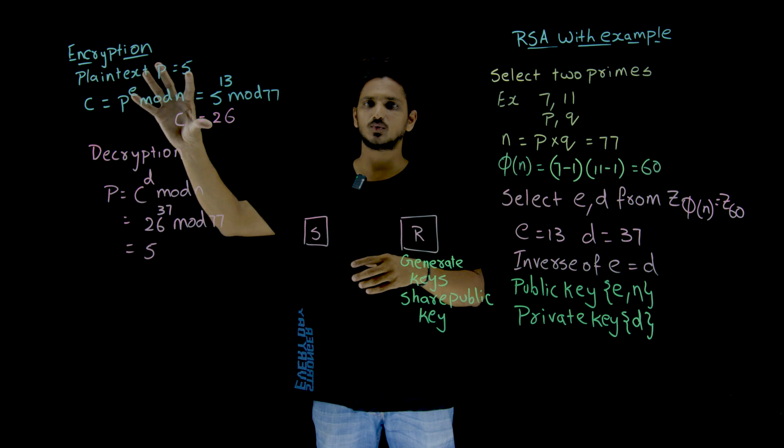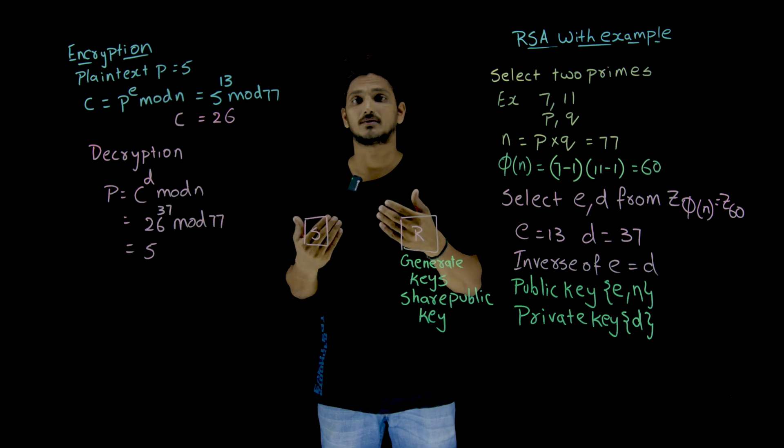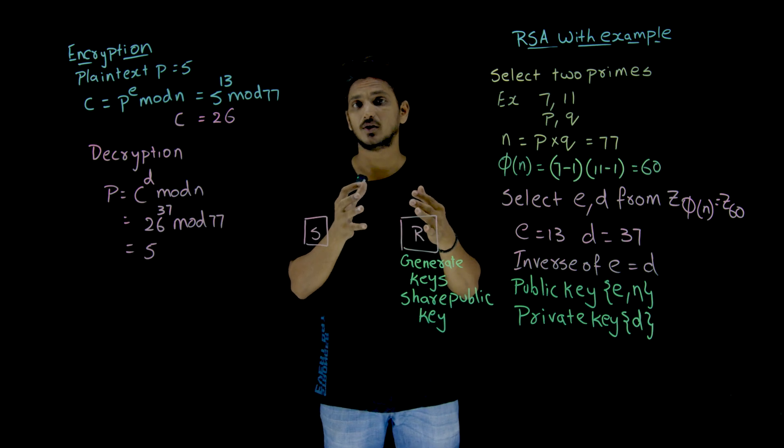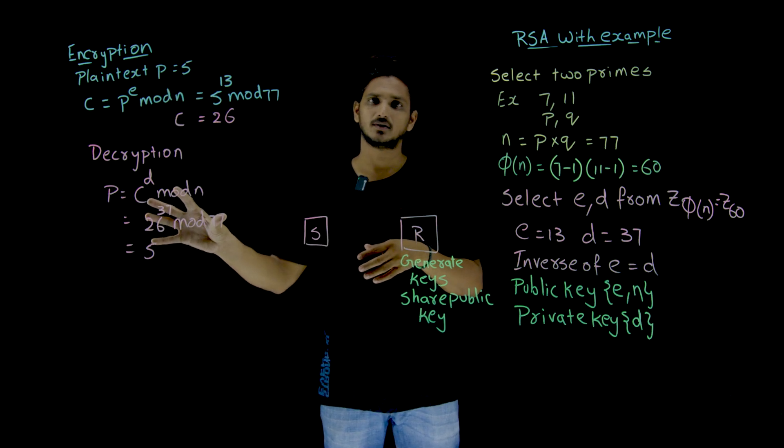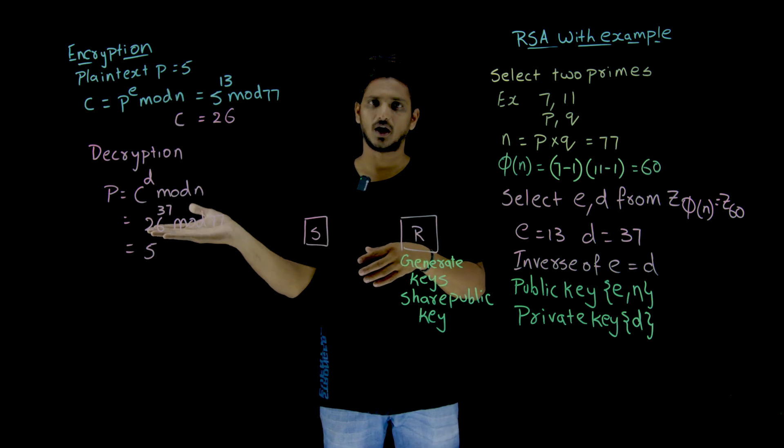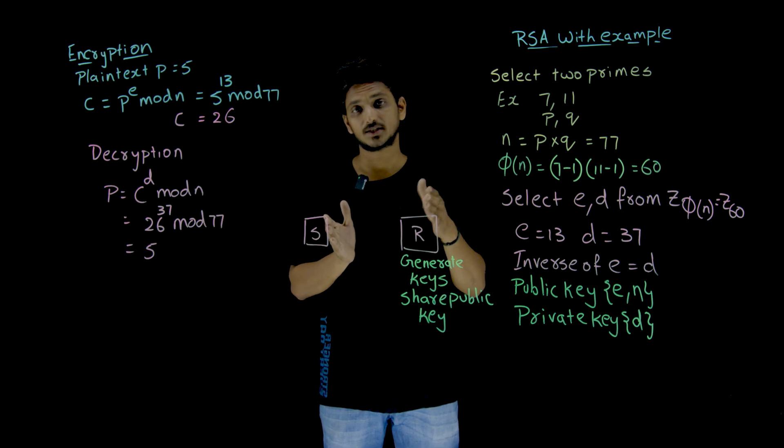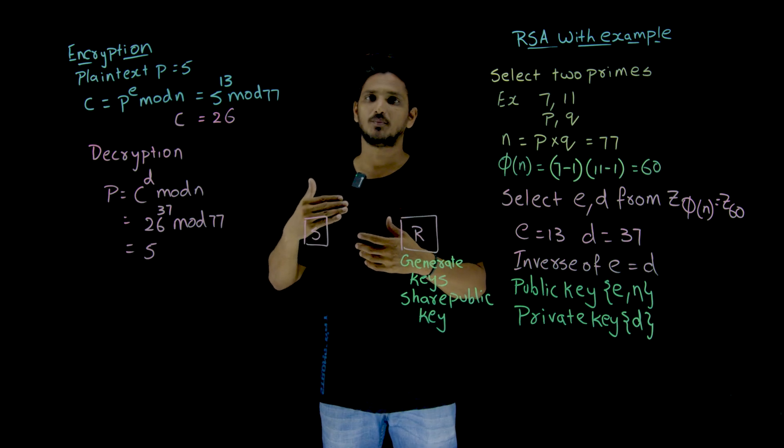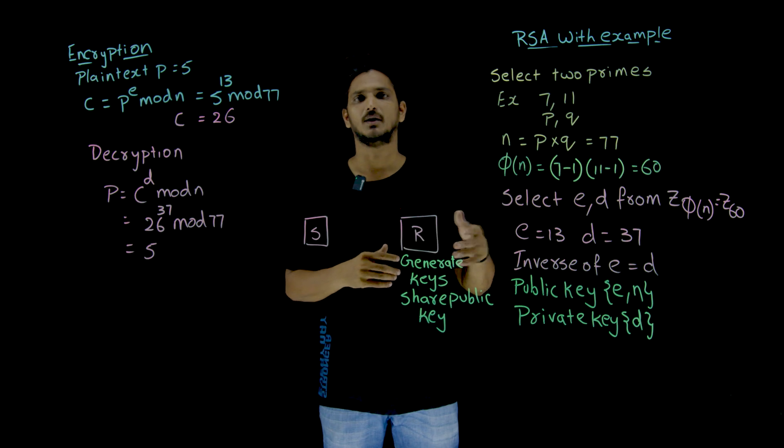So this is what happens in RSA algorithm. During encryption, this is what happens. During decryption, this is what happens. Here we are doing it on numbers. Don't forget that. If you are having characters, you have to convert them into numbers and then identify the ciphertext and plaintext. We will do one more example in our next classes on how to convert the given plaintext to numbers and how we apply the encryption and decryption.